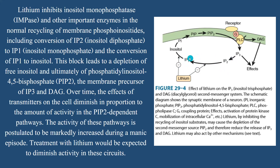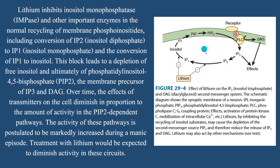Similarly, in the next step of the cycle, IP1 (inositol monophosphate) being converted into inositol is also being inhibited by lithium. So both of these steps are halted by lithium, leading to a depletion of free inositol and ultimately phosphatidylinositol 4,5-bisphosphate (PIP2), which is also inhibited.